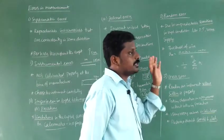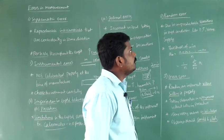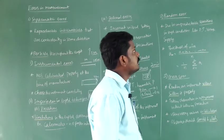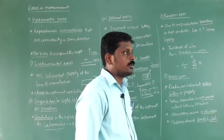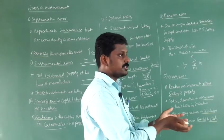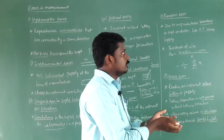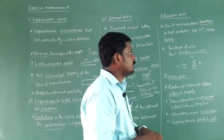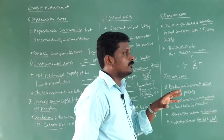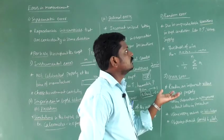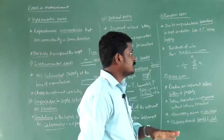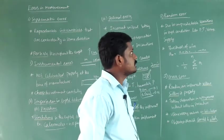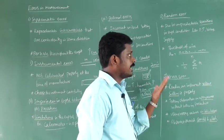The next type is random error — due to random and unpredictable variations in experimental conditions like pressure, temperature, and voltage source. For example, if you are measuring something using a digital meter and the voltage source changes slightly, the reading will also change. That is an unpredictable variation in experimental conditions, resulting in random error.